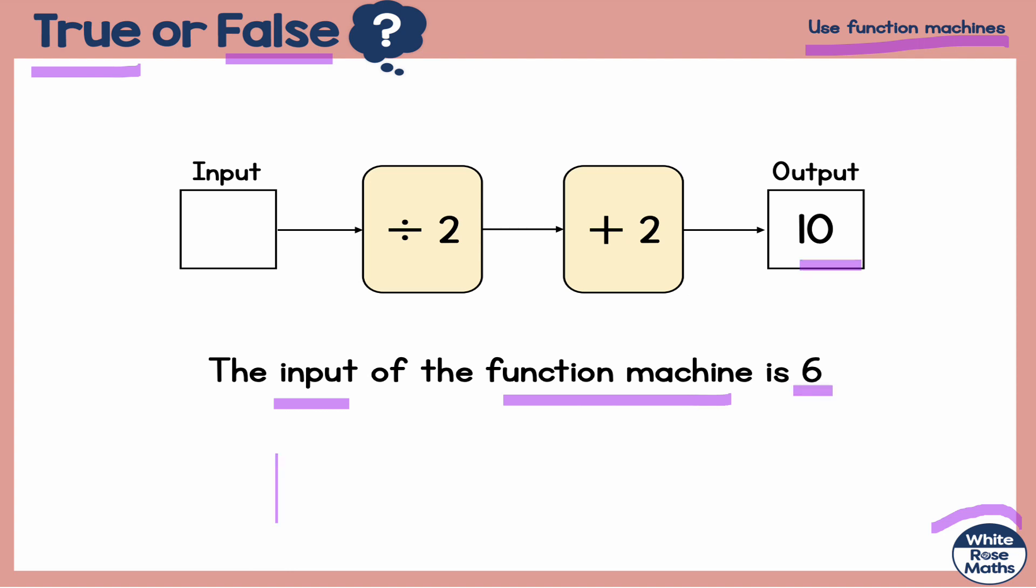Well, if the output is 10, going backwards here I'm going to do 10 take away 2, which we should know is 8. Then the opposite of dividing by 2 is to multiply by 2. So we're doing the reverse process: 8 times 2.